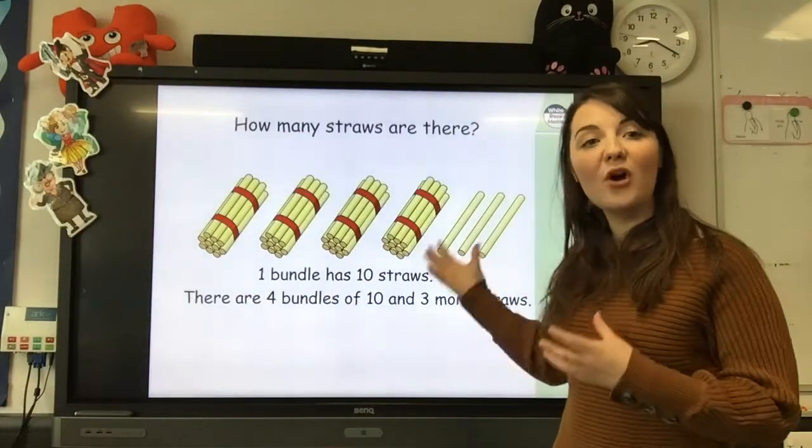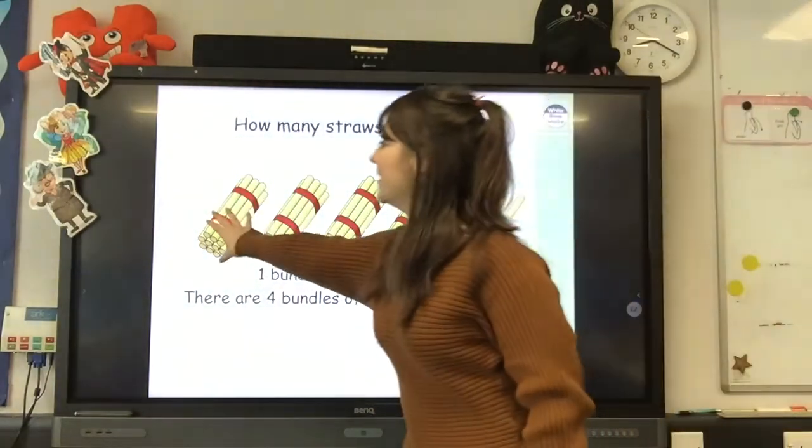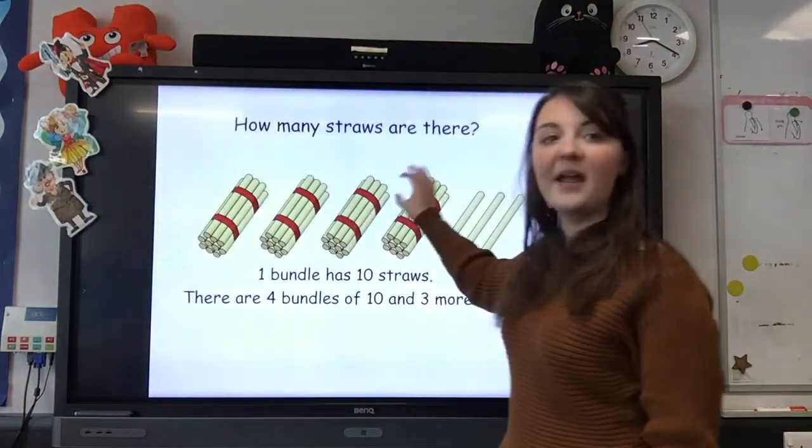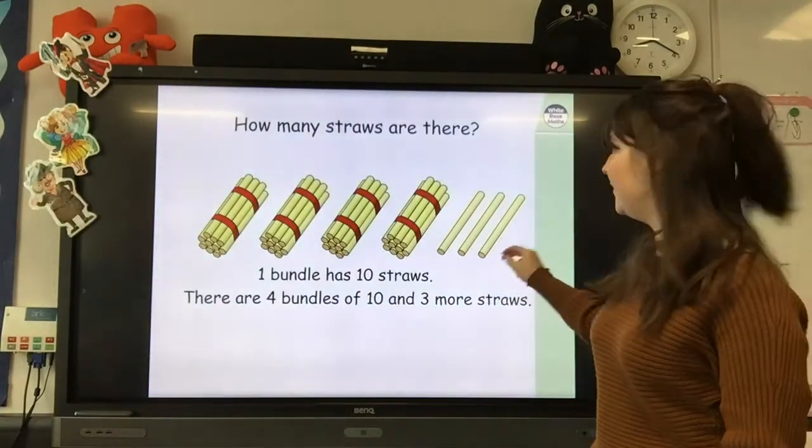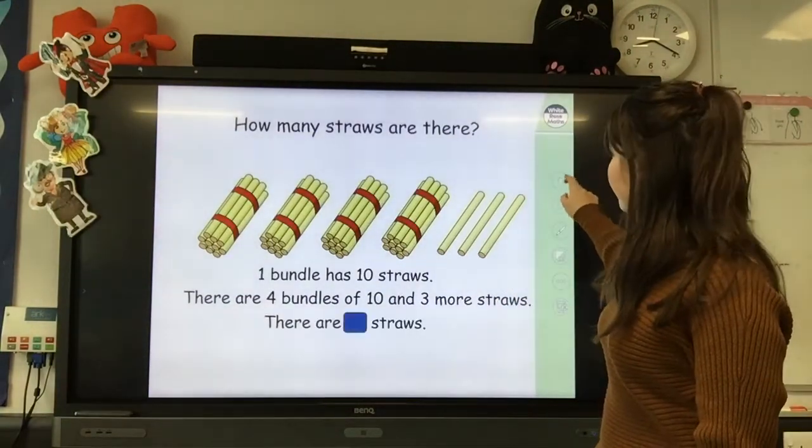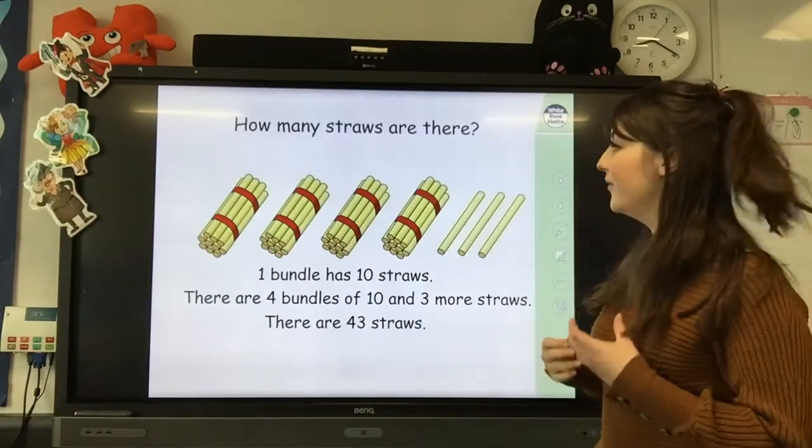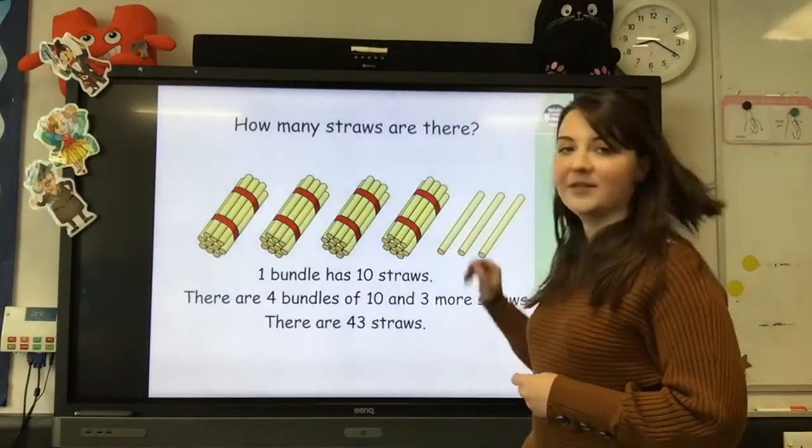Now let's count on from our tens to find the answer. 10, 20, 30, 40, 41, 42, 43. There are 43 straws all together. 43 has 4 tens and 3 ones.